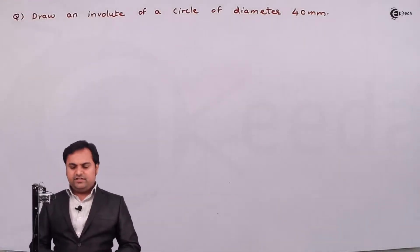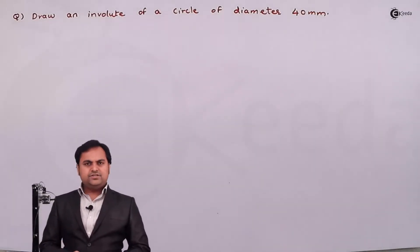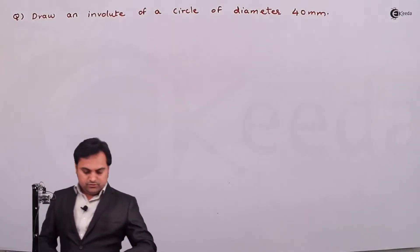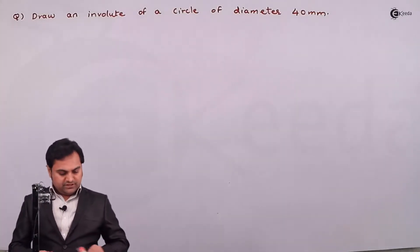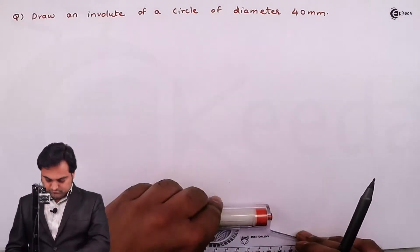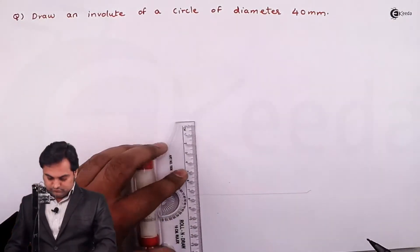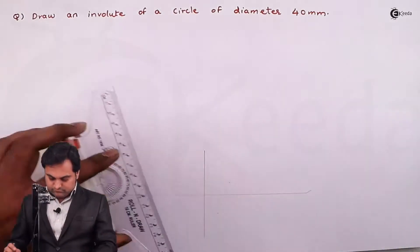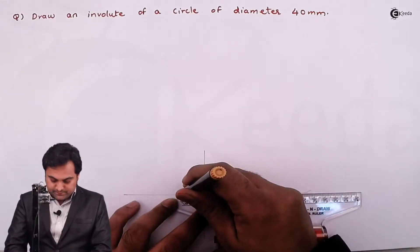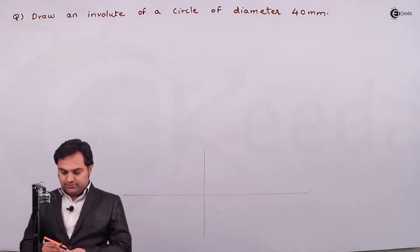Hello friends, in this video we'll see a problem on the involute of a circle. The question is: draw an involute of a circle of diameter 40mm. First I'll draw the circle — the diameter is 40, so the radius is 20. Drawing a light circle.